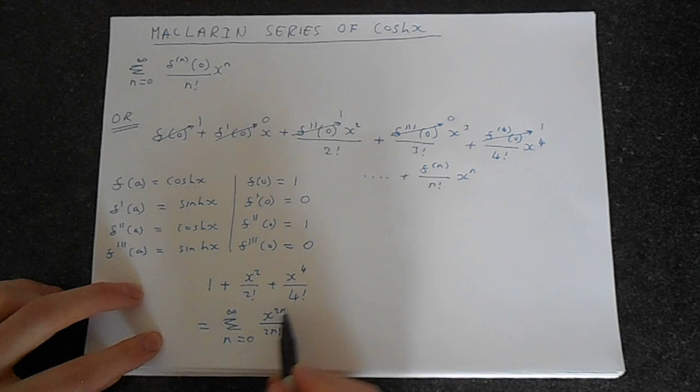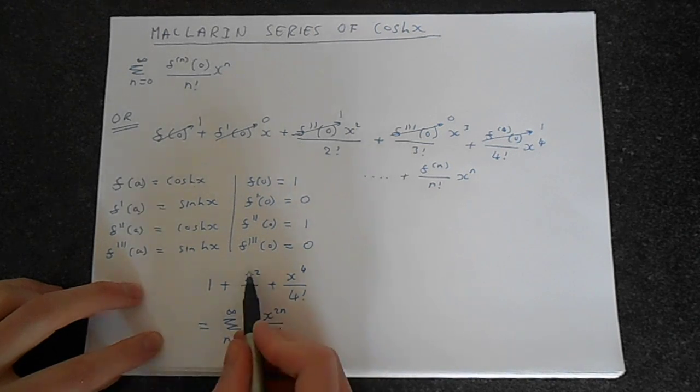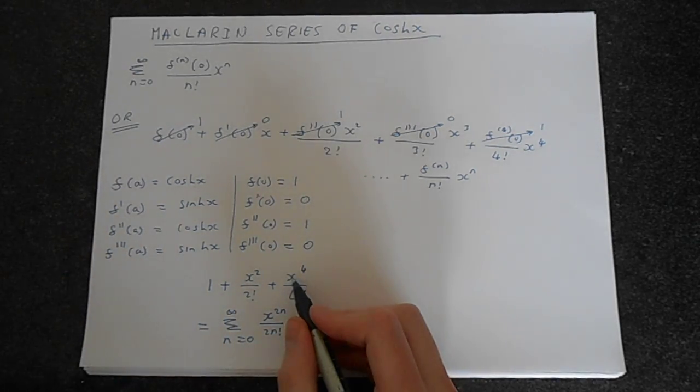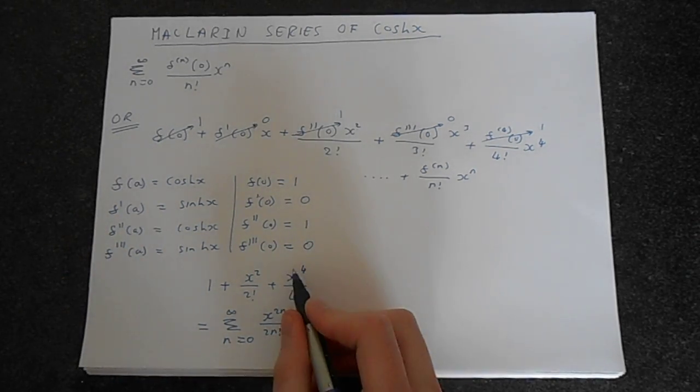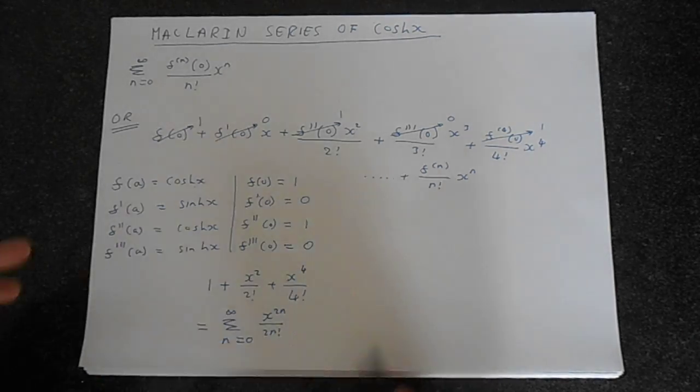When n equals 1, you get x to the 2 times 1, which is 2, so x squared, and then 2 times 1 is 2 factorial. And when n is 2, you're going to get 2 times 2, which is 4, so x to the 4th. 2 times 2 is 4, so 4 factorial. This series works.